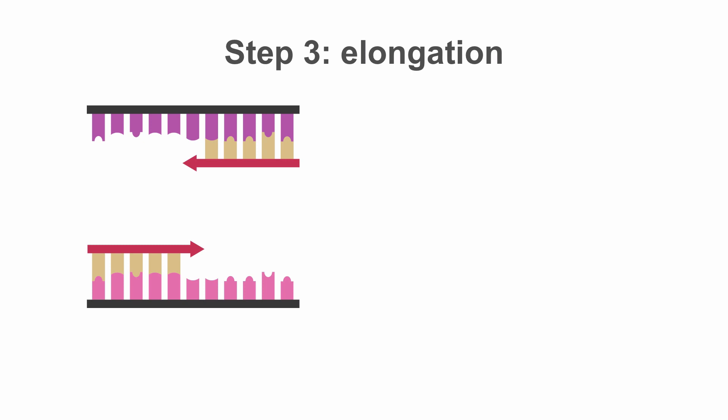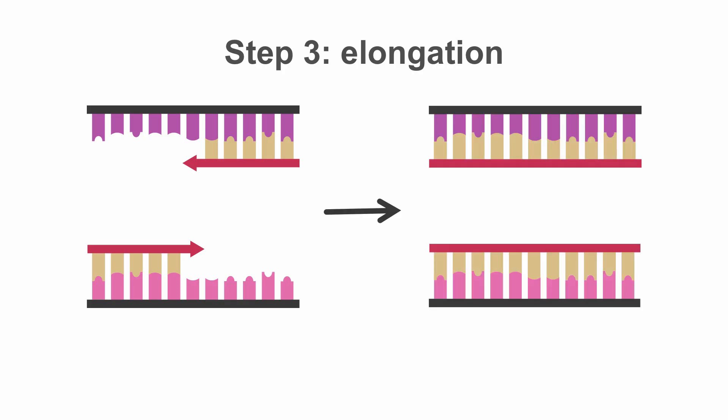In the third step, called elongation, an enzyme known as a polymerase adds nucleotides to the ends of the primers, using the original DNA strand as a template. And now we've gone from one double-stranded DNA molecule to two.